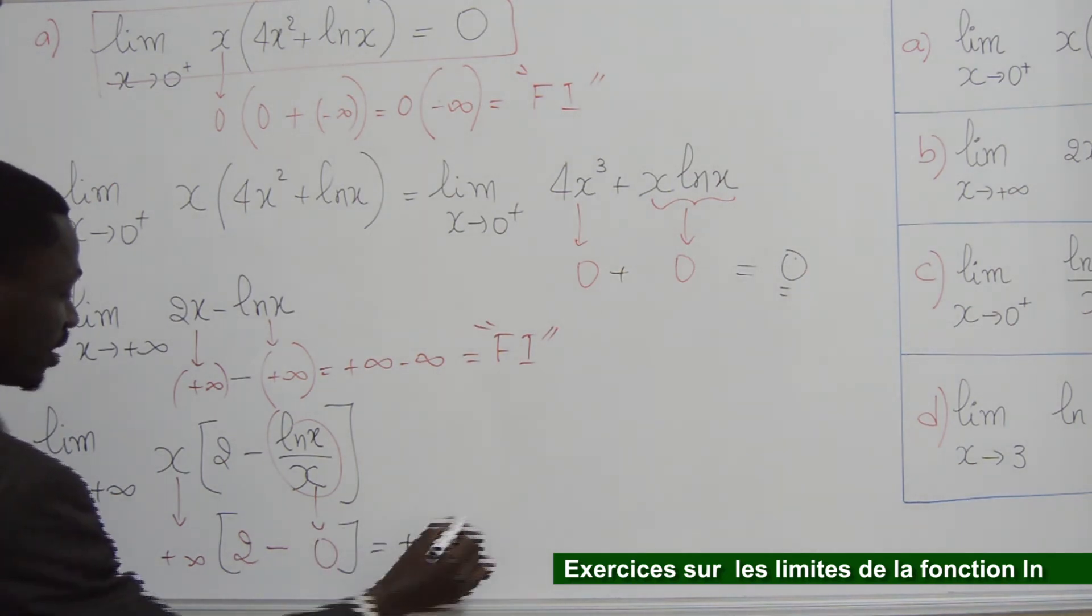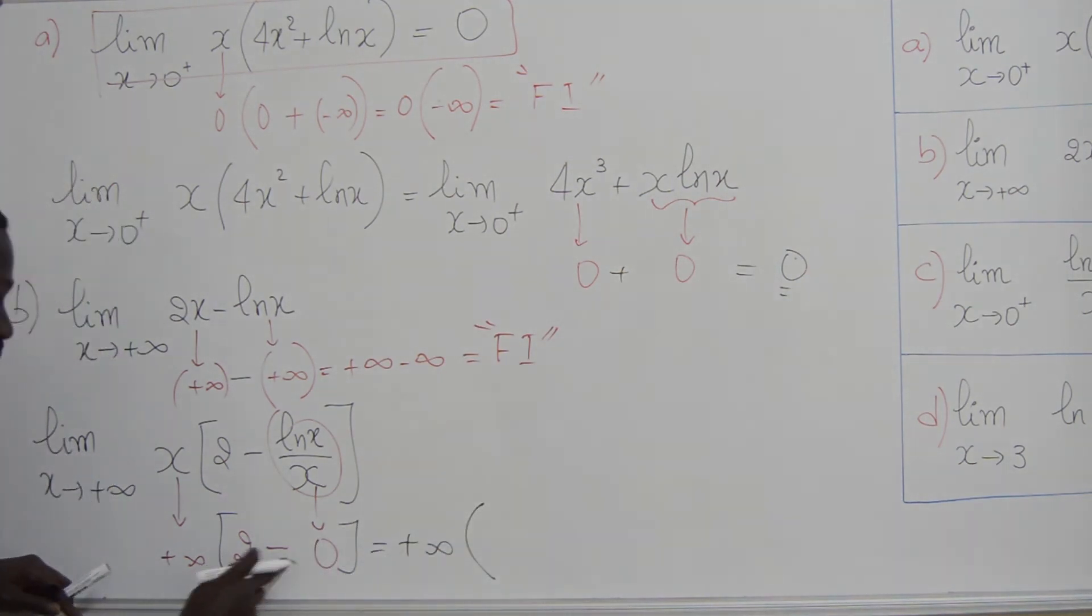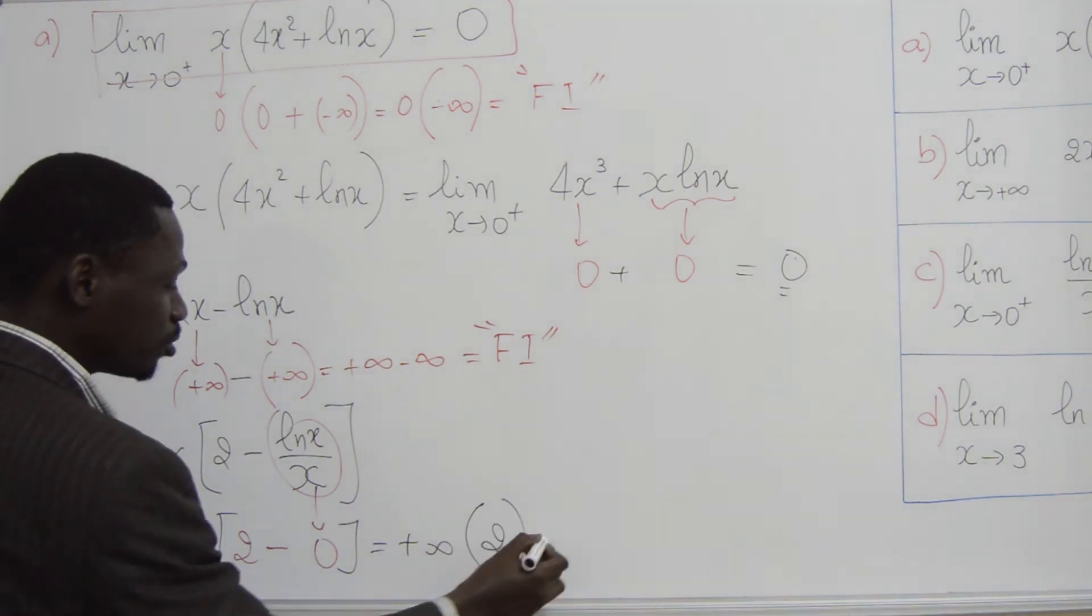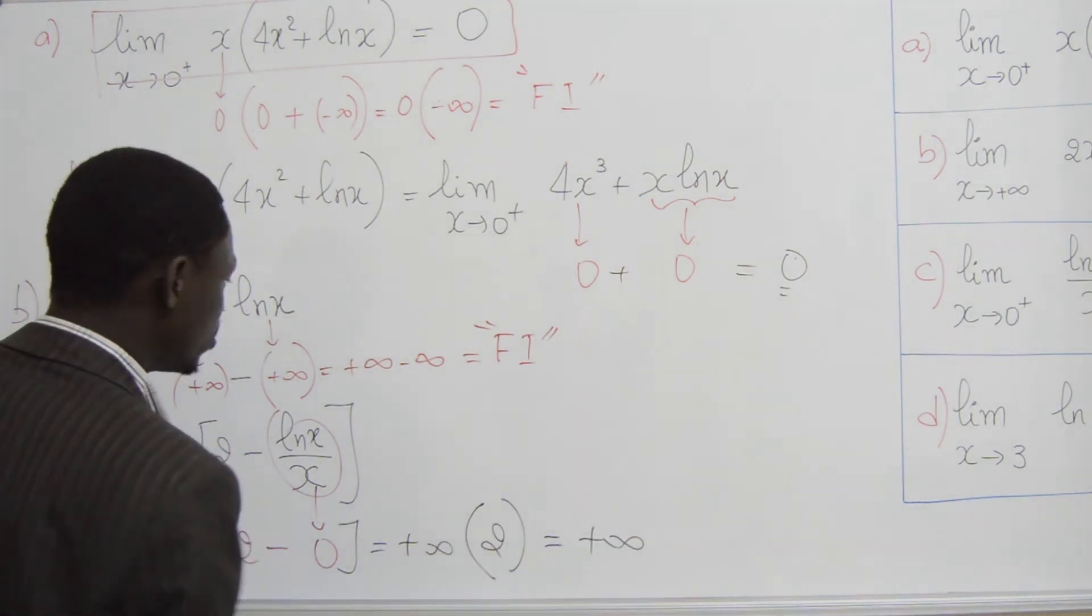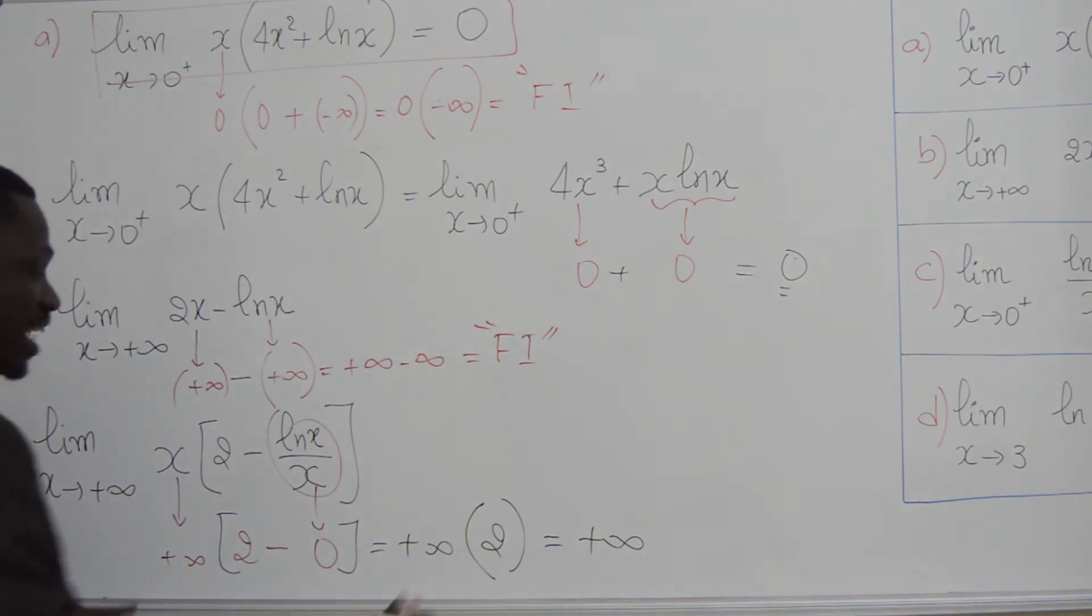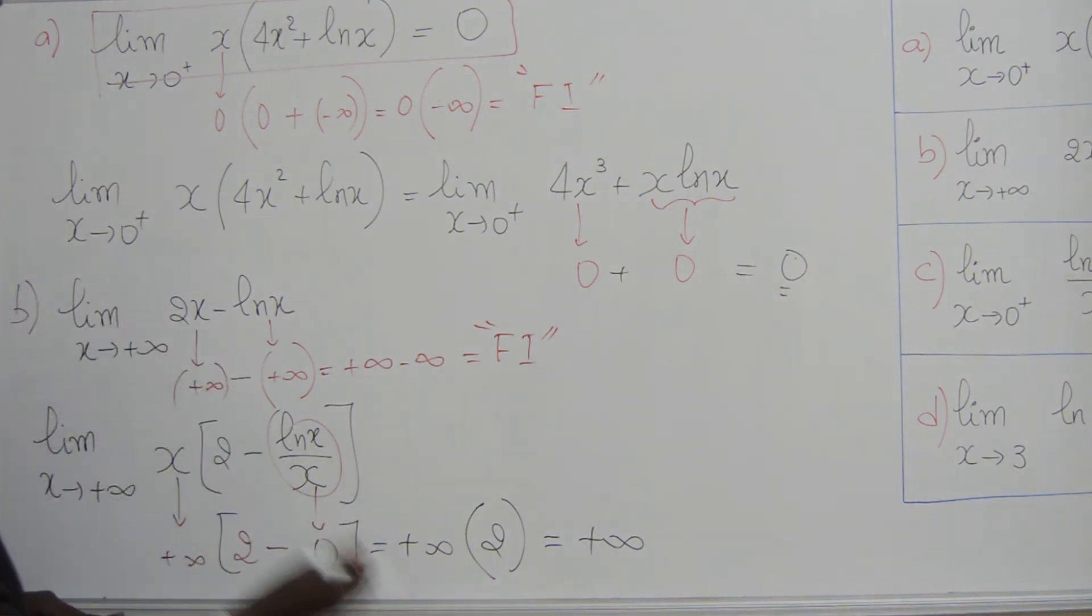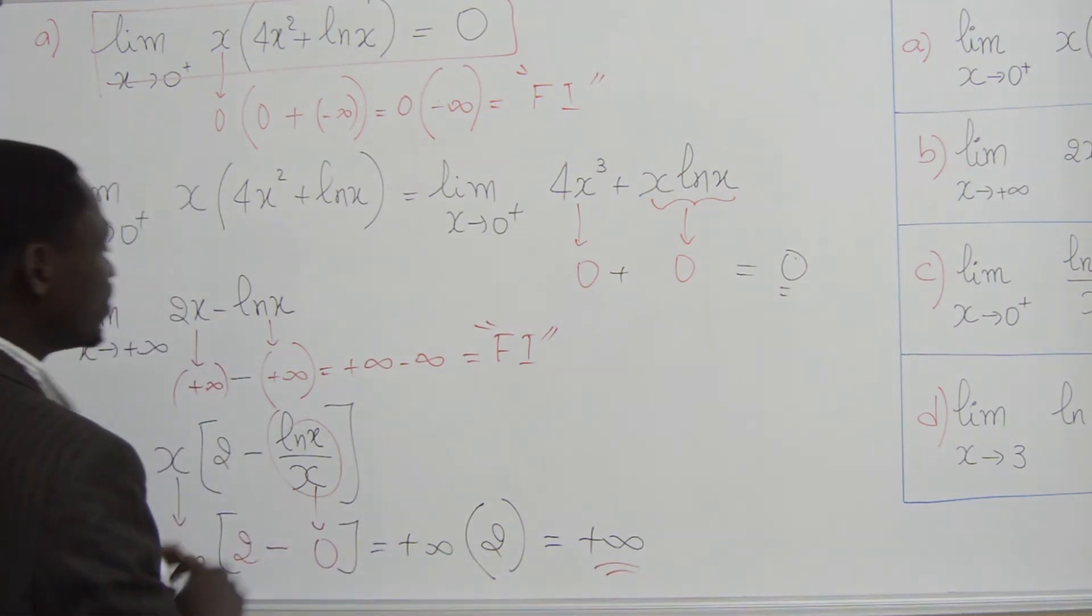Et comme résultat, on a plus l'infini facteur 2. 2 moins 0, c'est 2. Plus l'infini fois 2, ça donne plus l'infini. Donc, la limite en plus l'infini de 2x moins ln2x, ça donne plus l'infini.